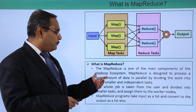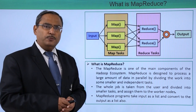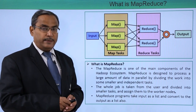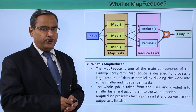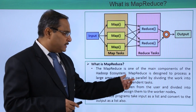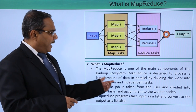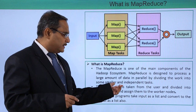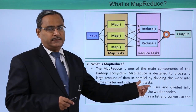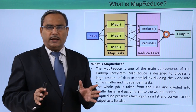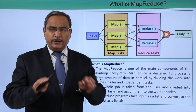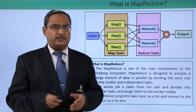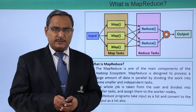MapReduce is one of the main components of the Hadoop ecosystem. MapReduce is designed to process a large amount of data in parallel by dividing the work into smaller and independent tasks. The large dataset will be divided into smaller pieces, assigned to the working nodes, and those tasks will be executed in parallel for faster processing.